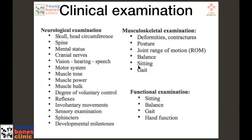The basic points in clinical examination have three main headings: the neurological examination, musculoskeletal examination, and functional examination. The neurological part includes assessment of higher mental functions, cranial nerves, motor power, sensory function, reflexes, and gait — the last being a very important part of the neurological examination.